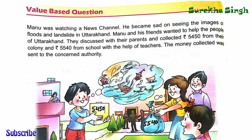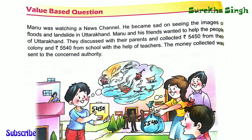The money collected was sent to the concerned authority. So in this passage we saw Manu and his friends wanted to help the people of Uttarakhand. They collected some amount with the help of the colony and school and sent that money to the concerned authority.